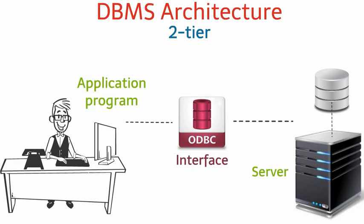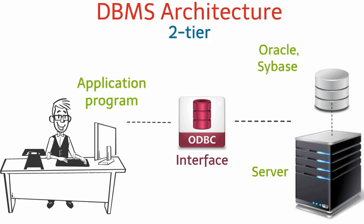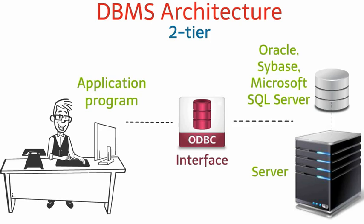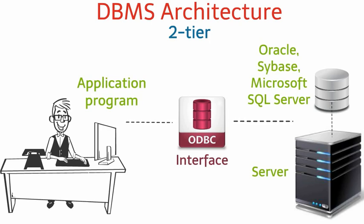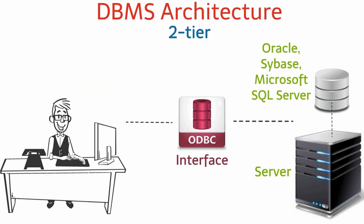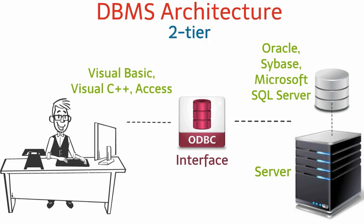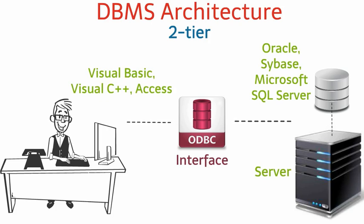Some common examples of two-tier architecture are database servers like Oracle, Sybase, and Microsoft SQL Server. Users interact with the data using client applications or GUI such as Visual Basic, Visual C++, or Access.